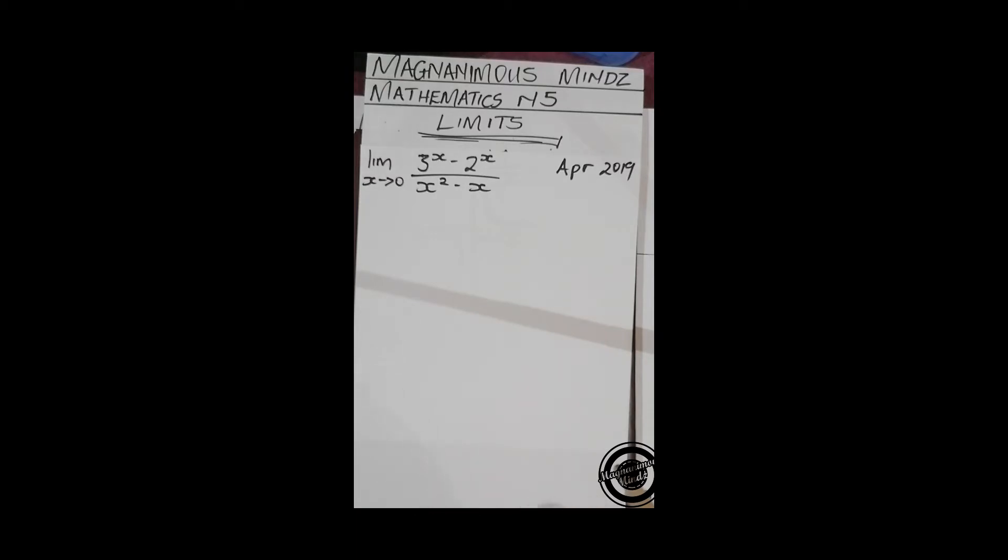Here we've got a typical exam question from the past exam paper of April 2019. We're given the limit as x approaches 0 of (3^x - 2^x) over (x² - x).